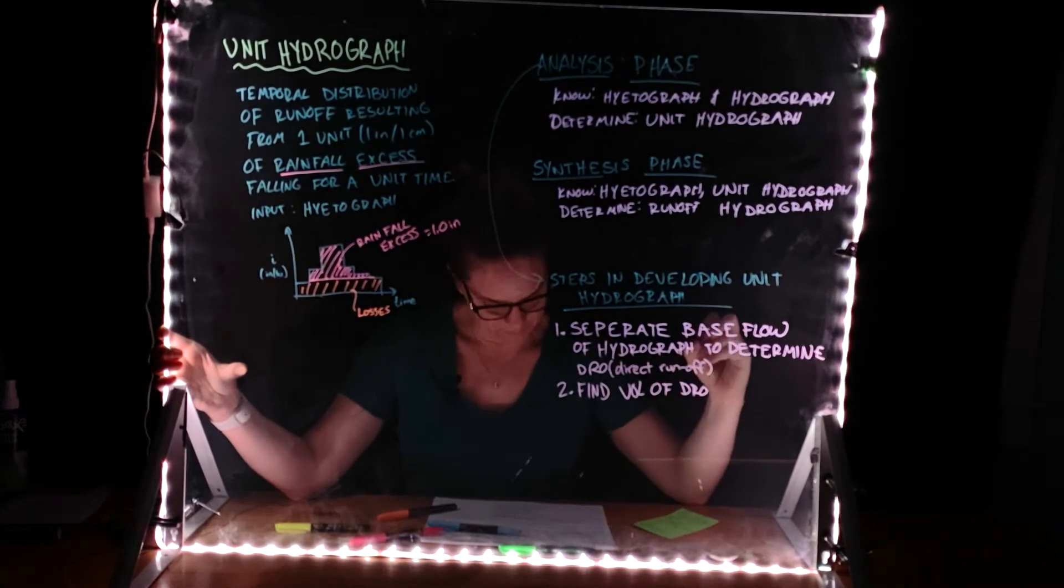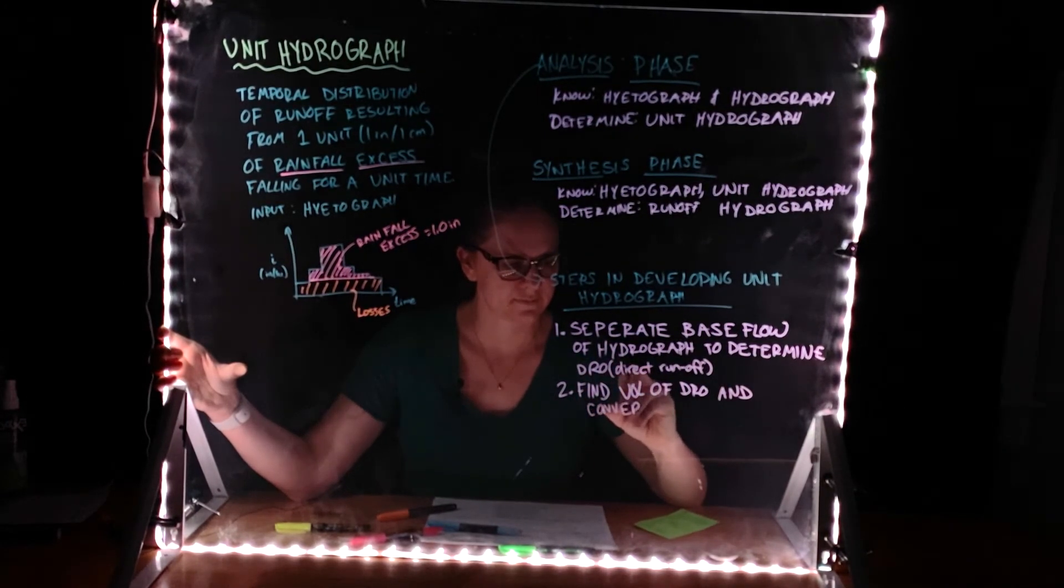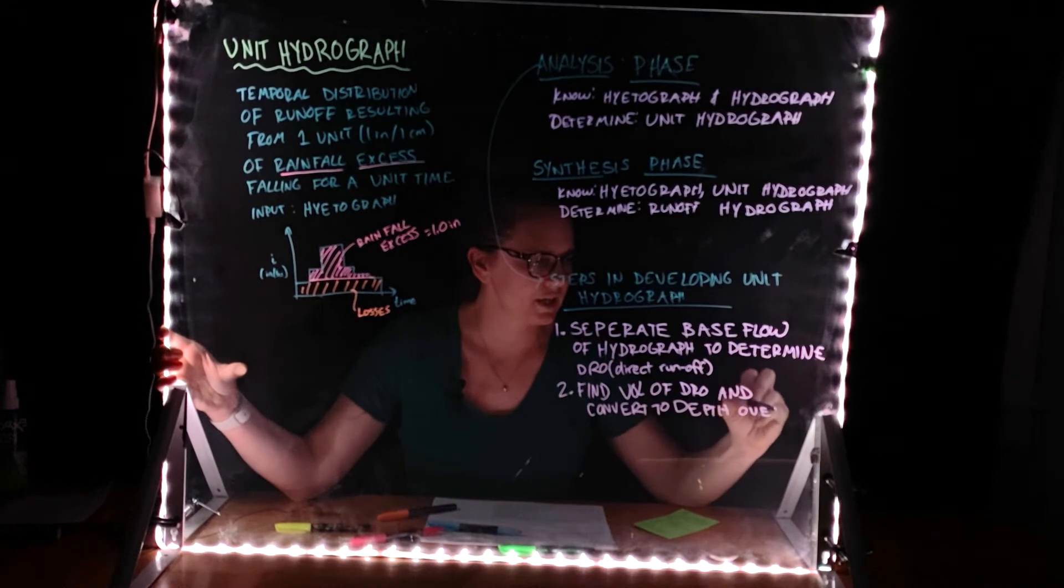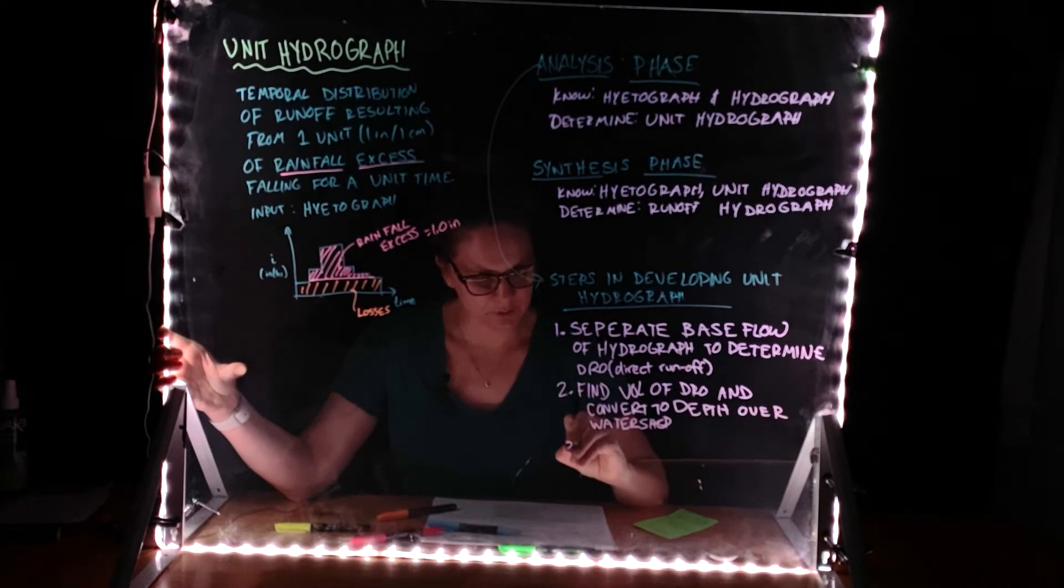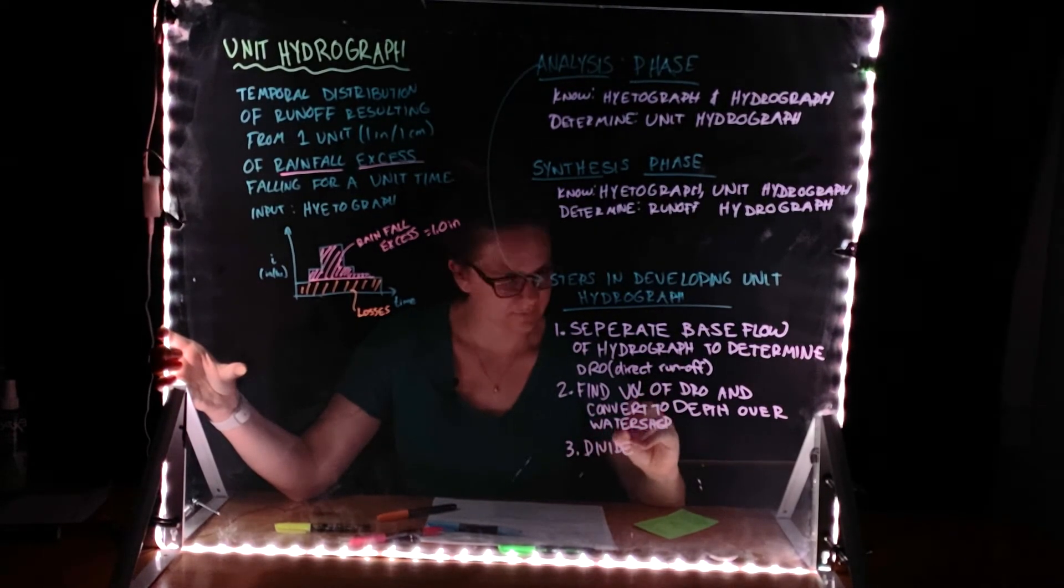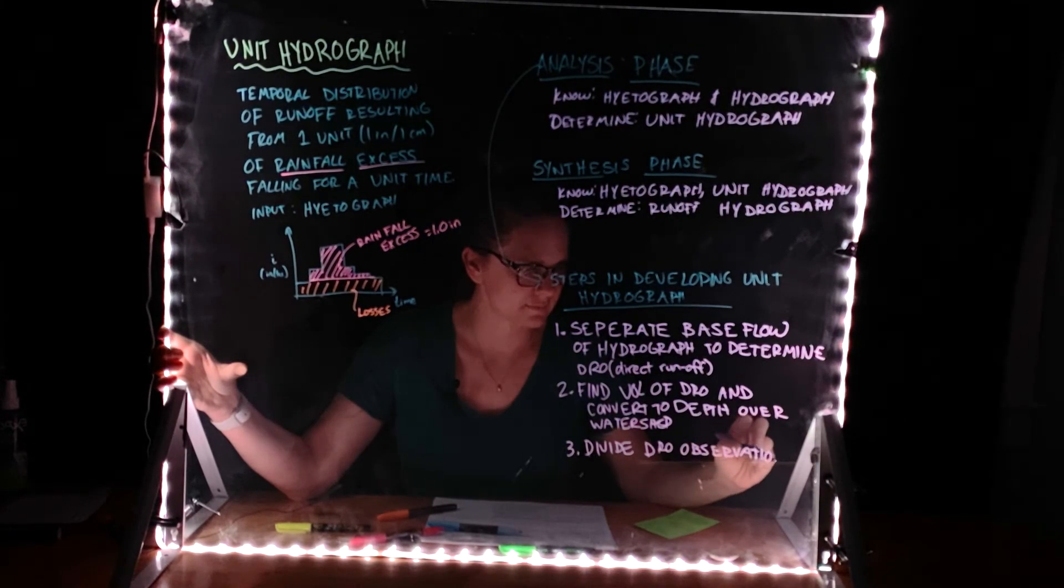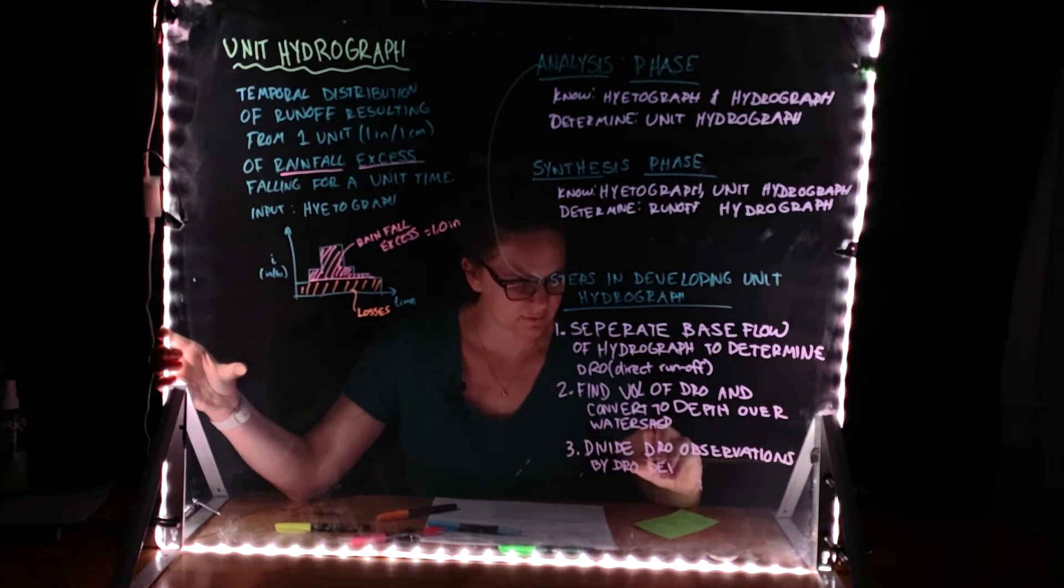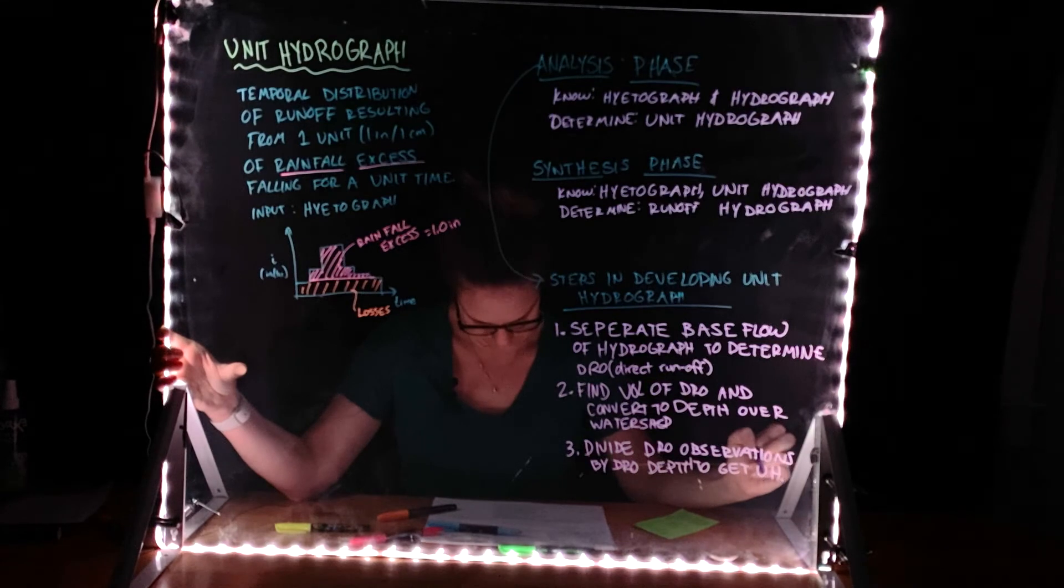So you're going to find the volume of that direct runoff and convert to a depth over your watershed or your basin, your project area. Number three is to divide the direct runoff. So you're going to find the direct runoff observations by the direct runoff depth to get your unit hydrograph observations.